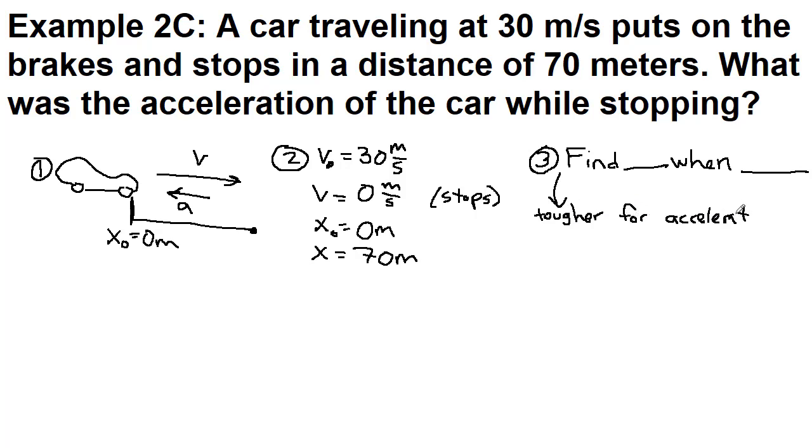So we need to find two things that are true at the end of the problem. Okay, so we are trying to find the acceleration if x equals 70 when v equals 0 meters per second.